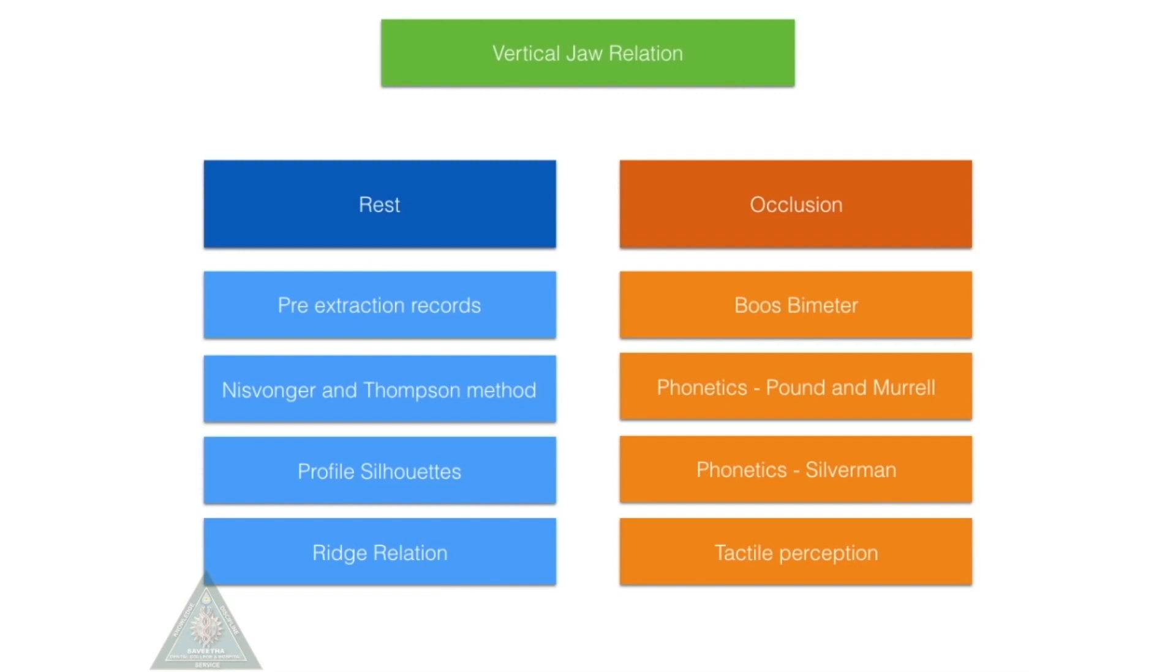The next method is using ridge relation. If you can part between the lips and see that the ridges are parallel to each other, you know probably your vertical dimension is around the right area.